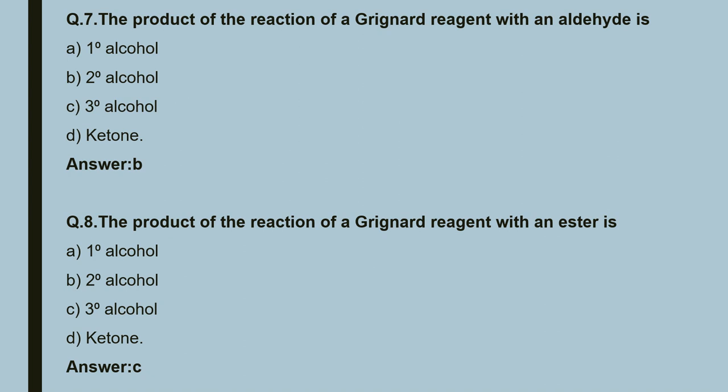Question 8: the product of the reaction of Grignard reagents with an ester is — 1° alcohol, 2° alcohol, 3° alcohol, or ketone. The correct option is C, that is 3° (tertiary) alcohol. Grignard reagents react with esters to form tertiary alcohol.